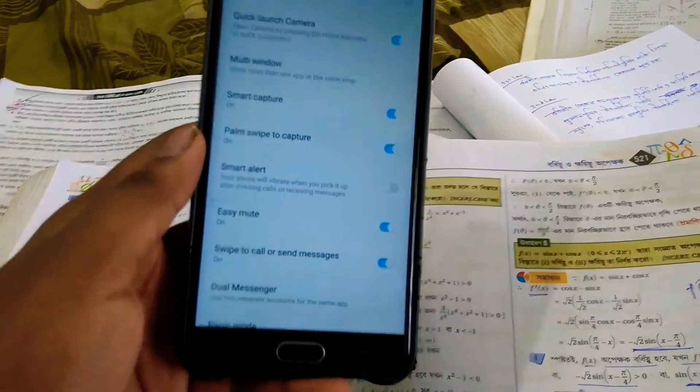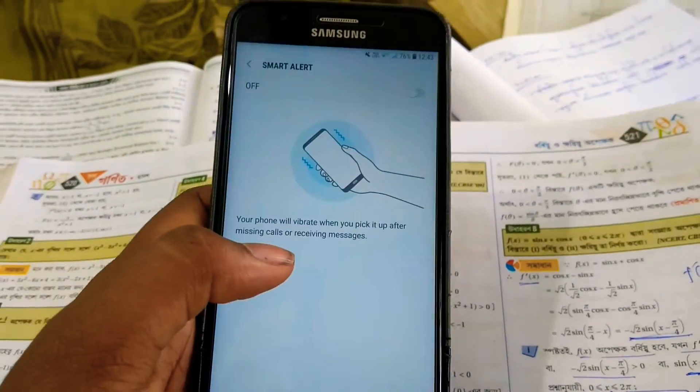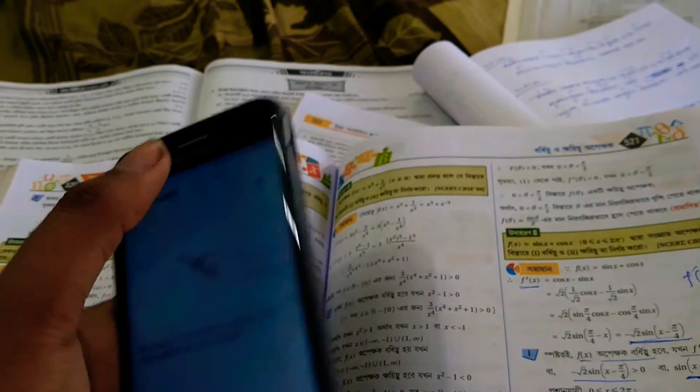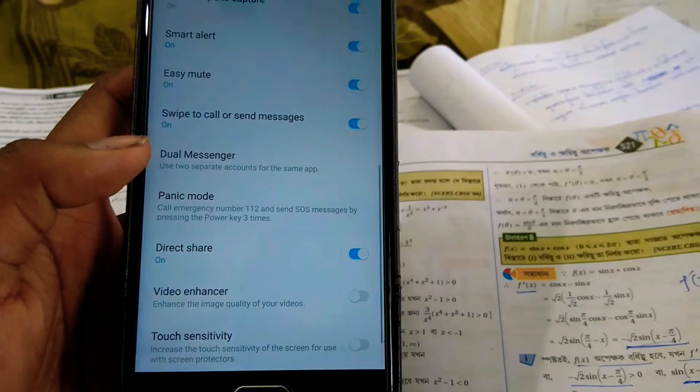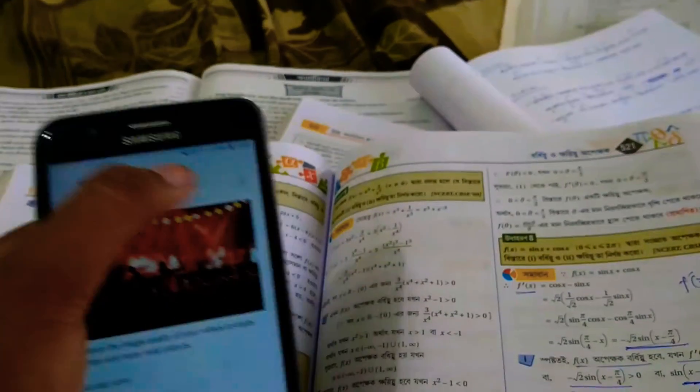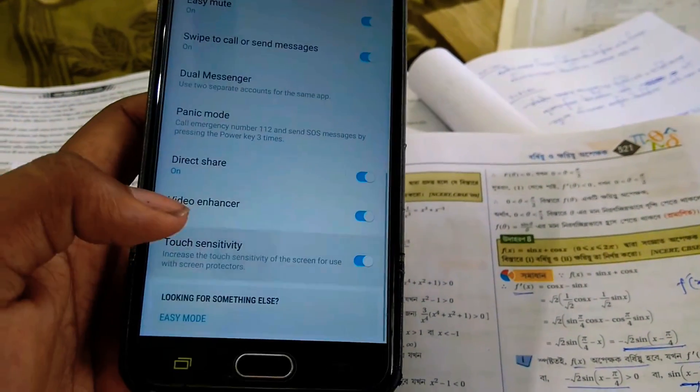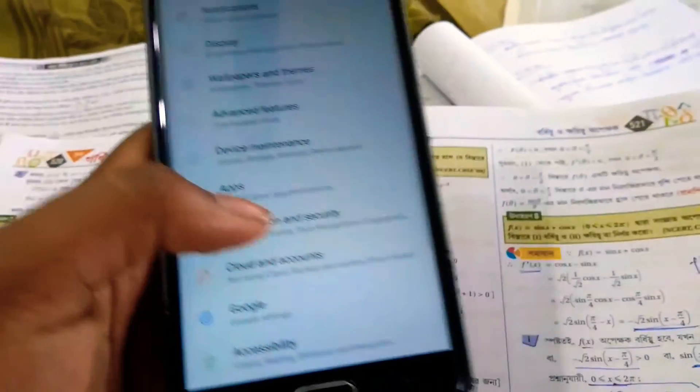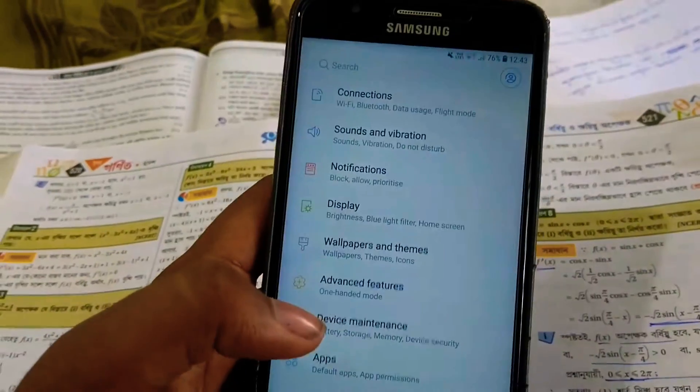Palm to capture sadly doesn't work—I've tried a lot but it doesn't work. Smart alert is also available on the Galaxy J7 Prime stock ROM, so that works. There's also WiFi messenger, panic mode, direct share, video enhancer, touch sensitivity—these things also work. It just boosts a bit of color in the video player and YouTube.